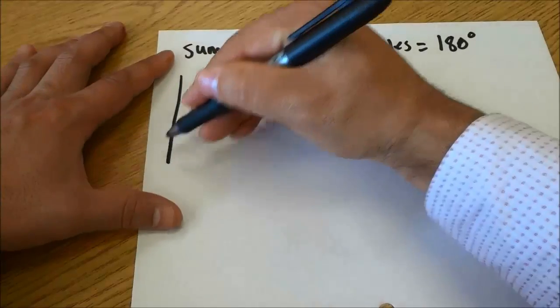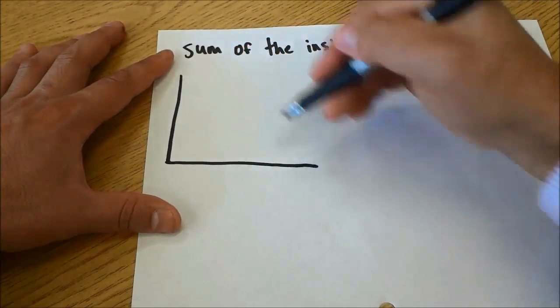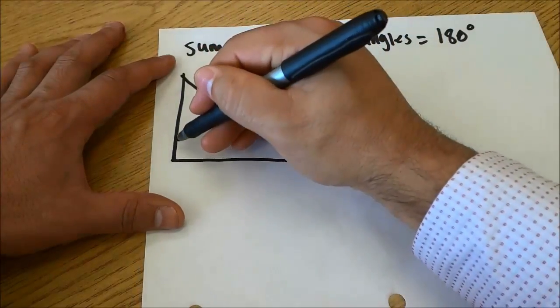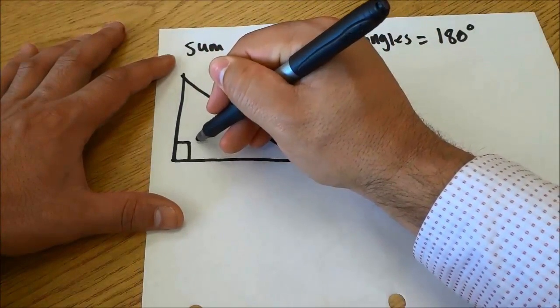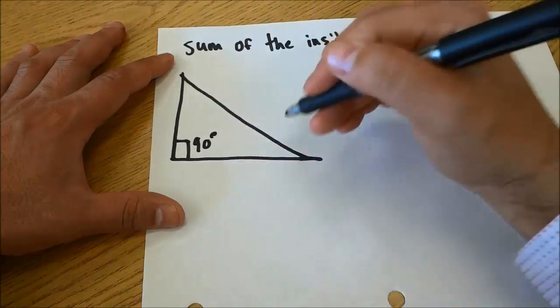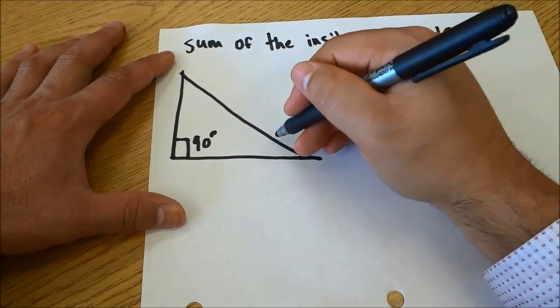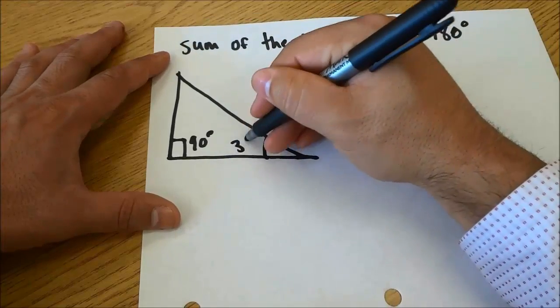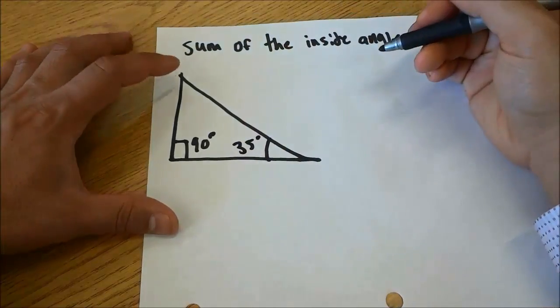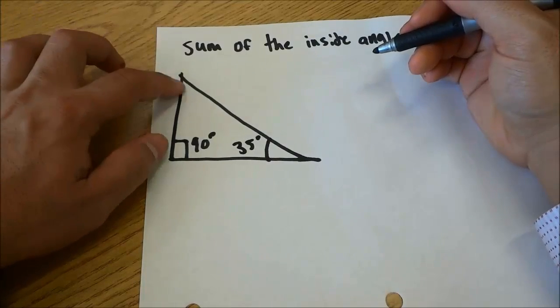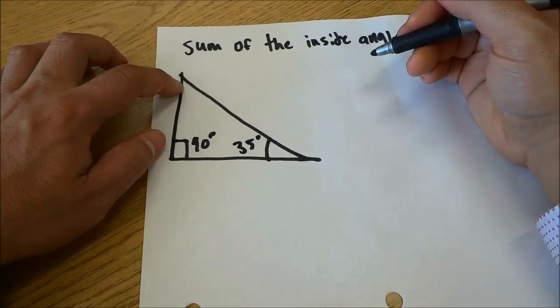I'm going to start off by drawing a triangle and this will be the first example. For this triangle right here, we are going to imagine that this angle is 90 degrees, this angle right here is 35 degrees, and we don't know what this angle is. We are trying to find the missing angle.